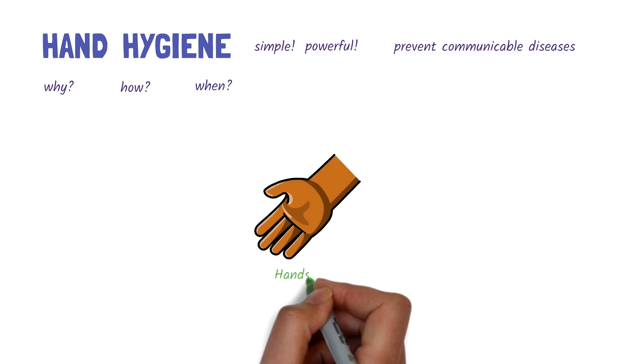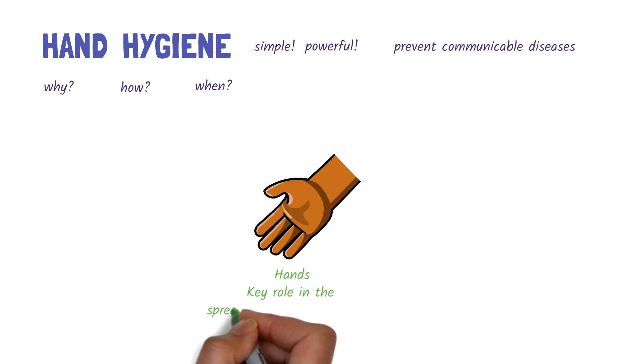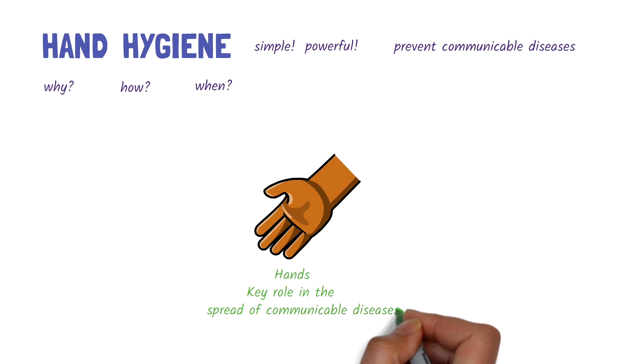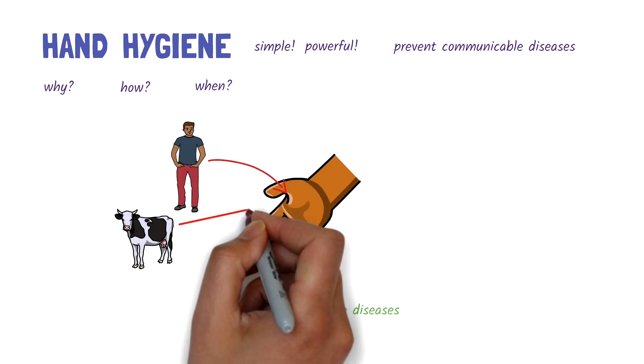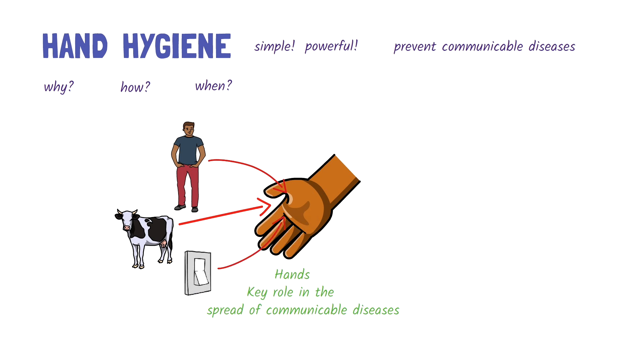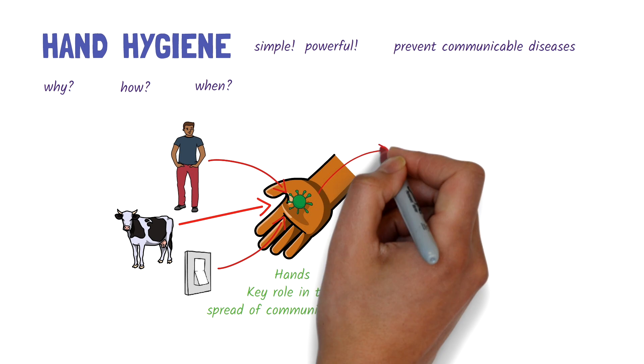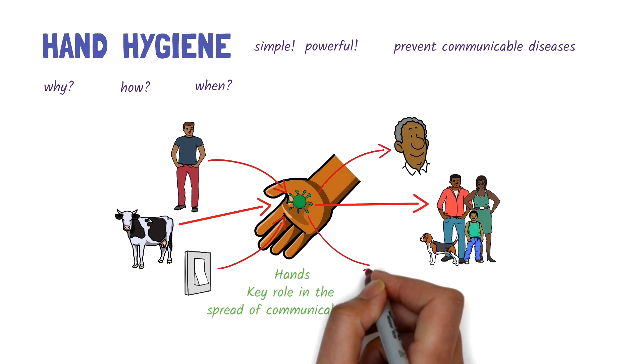Our hands play a key role in the spread of communicable diseases. Through contact with infected people, animals, or contaminated surfaces, hands can easily pick up harmful pathogens, then transfer them to the person, to others, or back into the environment.